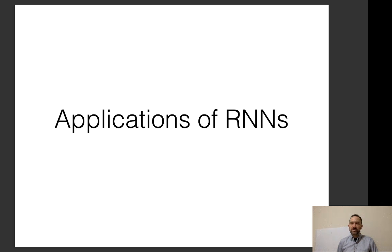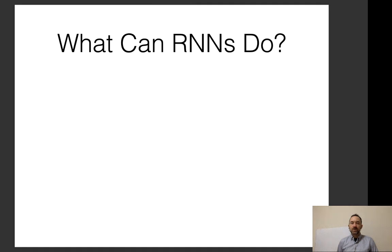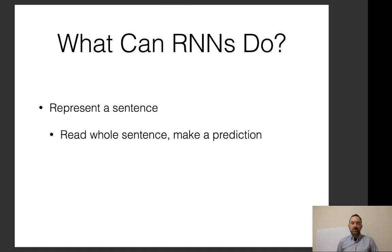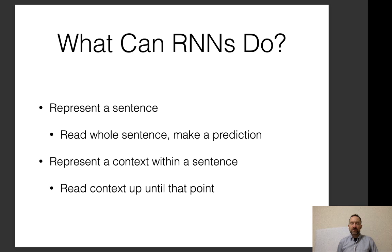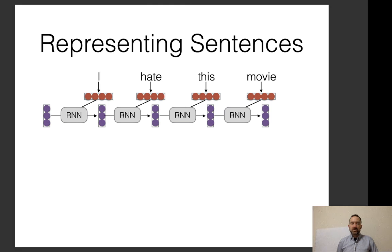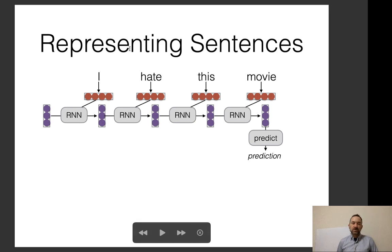Let's look at a few applications of RNNs. One thing RNNs can do is represent a sentence: you read in a whole sentence and make a prediction. You can also represent a context within a sentence, reading up to that point and using the vector to make a prediction. To represent a sentence, you read in all the words and use the final vector, or you could take all vectors and pool them with an element-wise max operation.